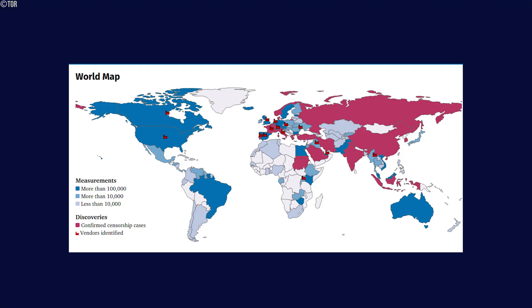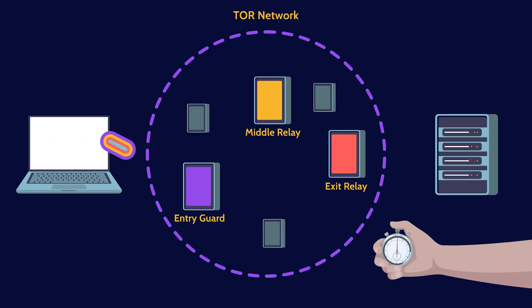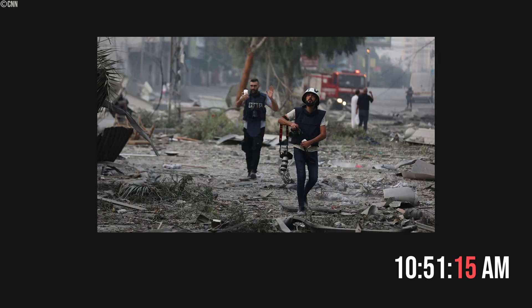Using Tor can be illegal in certain countries, primarily due to its association with the dark web or because it offers online privacy. When it comes to security concerns, one notable risk is triangulation, which occurs when a hacker gains control over both entry and exit nodes on the Tor network. By correlating the timing of traffic entering and exiting the network, they could potentially identify the origin of specific posts or comments. For example, a connection initiated at 10:51:15 AM could be linked to a post made at 10:51:16 AM, compromising user anonymity.